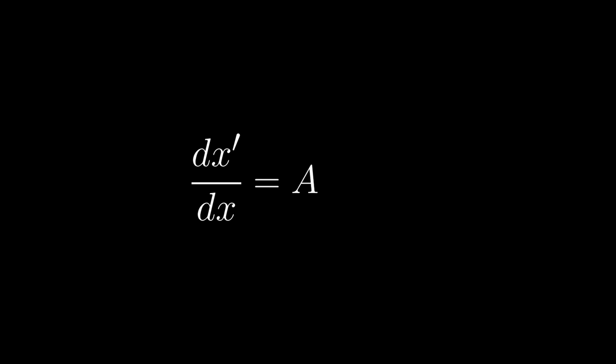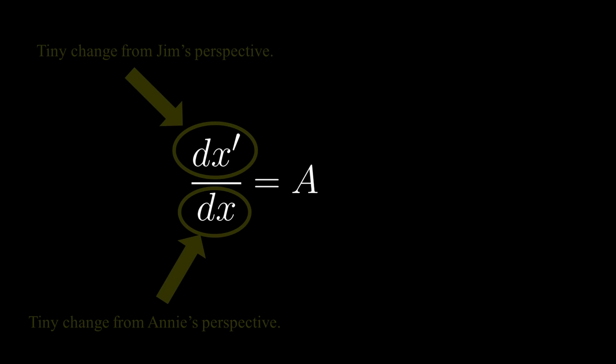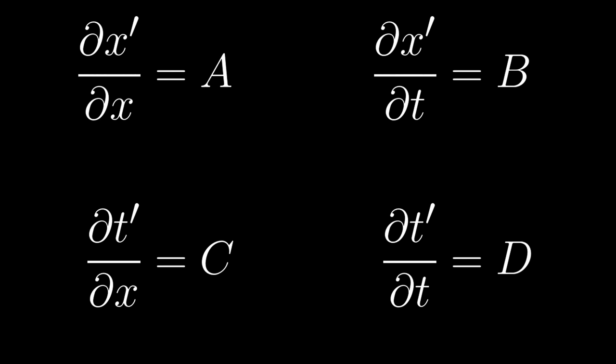This result should feel perfectly intuitive. All it says is that, given some tiny change in the rock's position from Jim's perspective, Annie observes some proportional change in position from her perspective. If we then take the ratio of these two changes, we get a constant value that does not depend on space or time. If we then repeat this argument three more times, we get three more ratios for a total of four unknown constants.